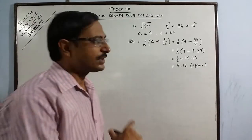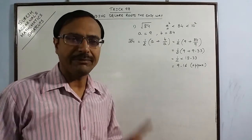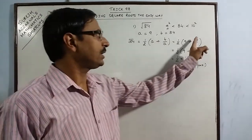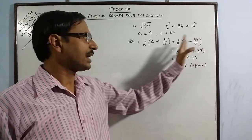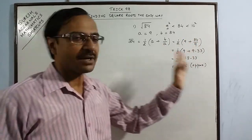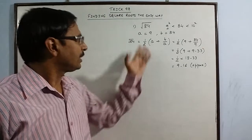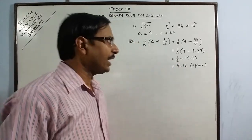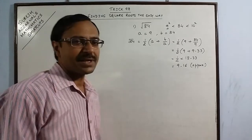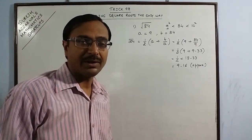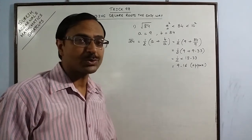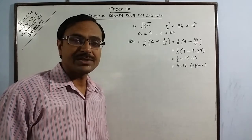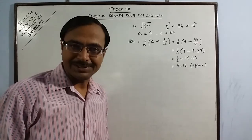Now this method involves only one division. Now here 84 upon 9, that division has to be done by the students in rough work and remaining everything can be done mentally. So through this method, students can get rid of the long division method which is taught to the students at class 8 level and students normally find that method complicated.